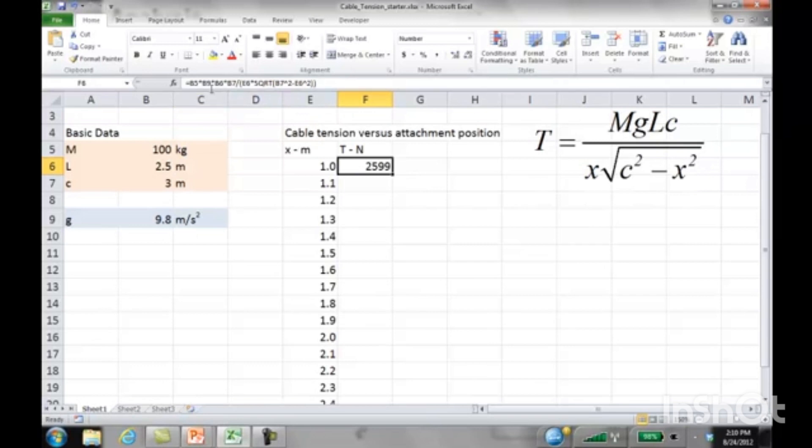To make a reference absolute, we want to make, for example, m which is b5 absolute. I can click in that formula, just click in the middle of the reference, and press the f4 key. The f4 key puts dollar signs before the b and before the 5, and that makes it an absolute reference. I'm going to do this also for g, click in and press f4, L press f4, c press f4, and then just the c down in the square root press f4. I'm going to press enter. It didn't change anything, but now if I copy this formula down.